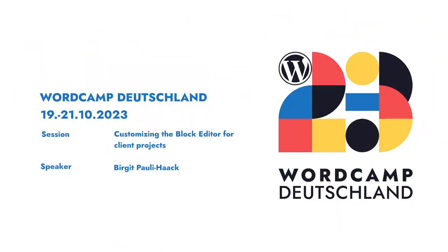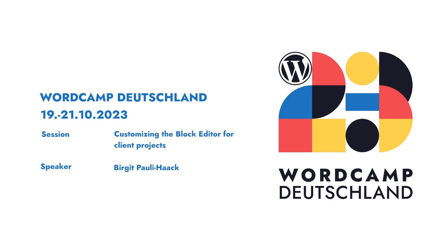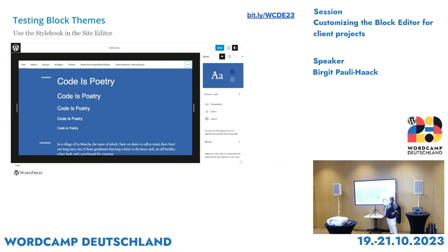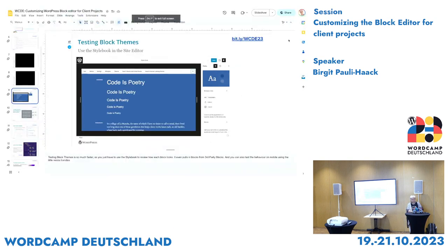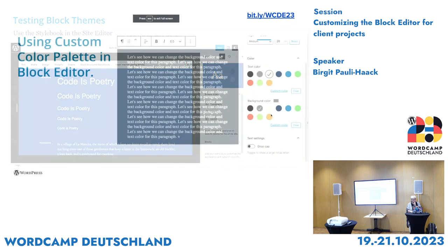If you have a block theme, that whole process of testing blocks is now built into the site editor in version 6.3. You go to the site editor, then to Styles, and you get a full set of blocks — text, media, design, widgets, theme blocks, and even custom blocks from plugins — to see how they work. You can also change them in the site editor.